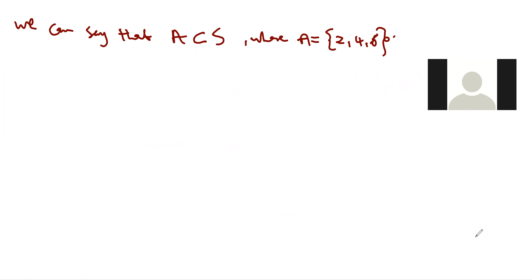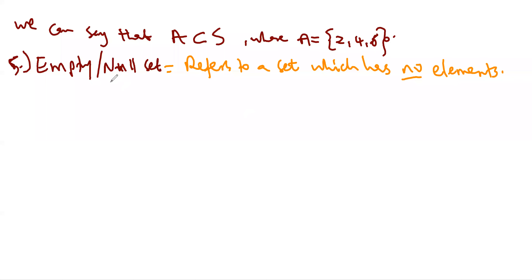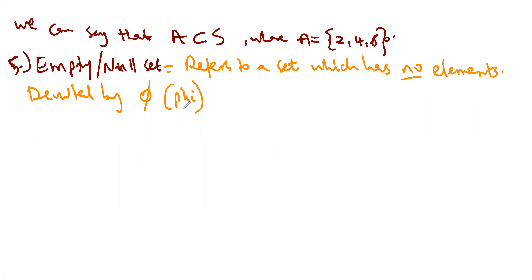Definition five is the empty or null set — a set which has no elements. This is usually denoted by the Greek letter phi (∅). So the set phi is a set with no elements; nothing is listed inside the brackets.